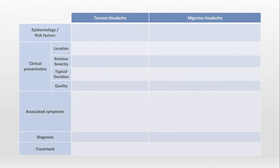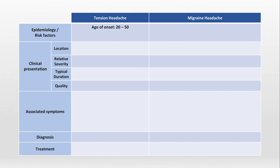To understand what I'm talking about, let's look at two examples, as illness scripts can be particularly illustrative if used to compare similar diseases. I'll compare the scripts for tension headaches and migraine headaches. For tension headaches, age of onset is typically 20 to 50, with a female predominance. It is overall the most common cause of chronic headaches.